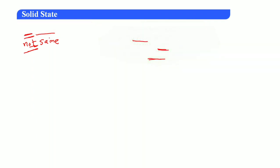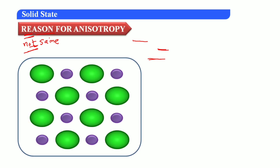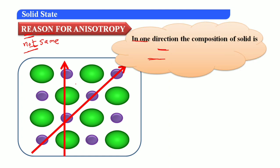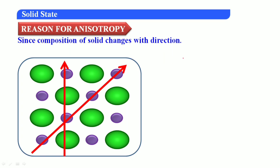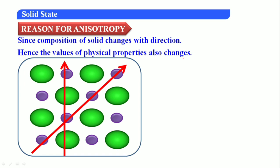The reason for anisotropy: in a crystalline solid, in one direction the particle arrangement is different from another direction. The composition of the solid changes with direction. Since the composition changes with direction, the value of the physical property also changes — we call this anisotropy. Amorphous solids, on the other hand, have the same properties in all directions — they are isotropic.